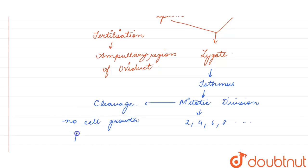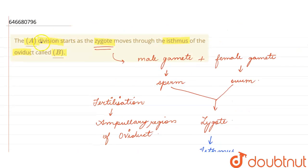But there is an increase in the number of cells, right? And that is why it is a type of mitotic division and is called as cleavage. All right, so this occurs in the isthmus as the zygote is moving to the isthmus towards the uterus.